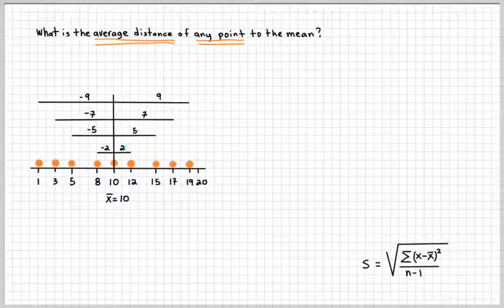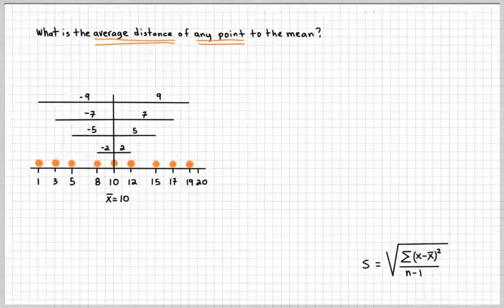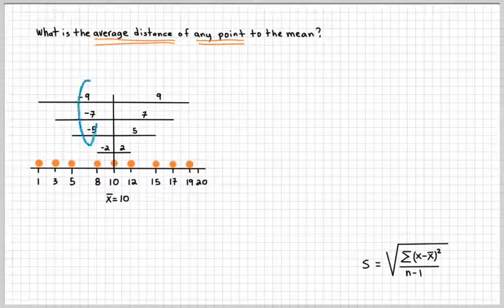And these points over here are below average. When you think of above average, you think of positive. When you think of below average, you think negative. It just means that you're below the average point, the average balance point.